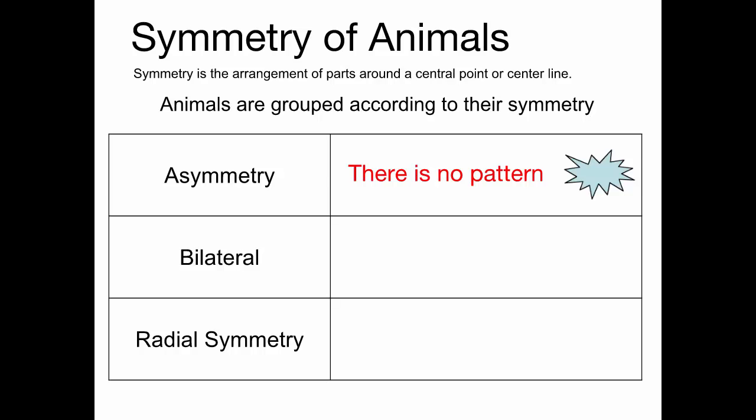Bilateral symmetry: 'bi' means two and 'lateral' means side. If you draw a line splitting the organism in half, the two sides would basically be mirror images of each other with the same arrangement of parts. It doesn't have to be perfect — even if one arm is slightly longer than the other, a human still has bilateral symmetry. It's about the overall general arrangement of the parts.